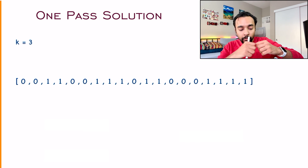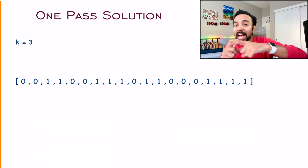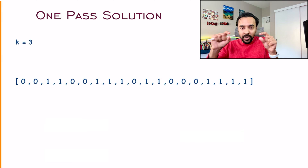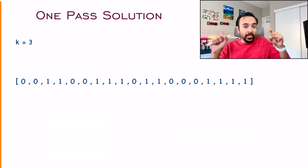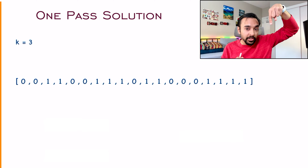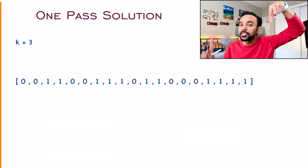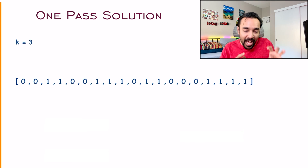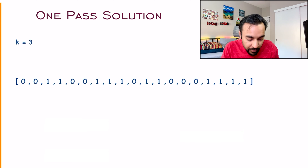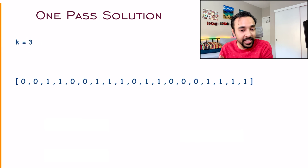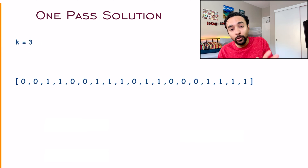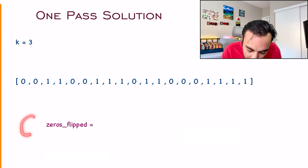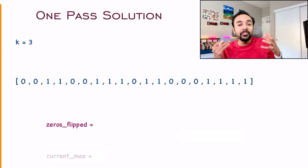The single iteration tells you a lot about the efficient approach. What you want to do is traverse only once and maintain some sort of a window. Because all of these ones will be consecutive, it will have some sort of a starting pointer and an ending pointer. I know the value of k is 3, so I can flip at most three zeros. Let us keep track of how many zeros we have already flipped.